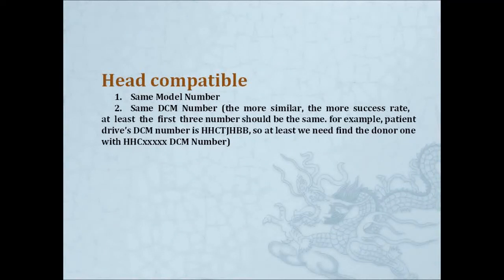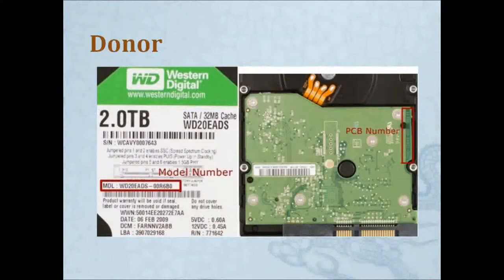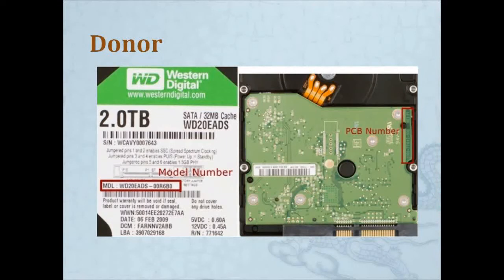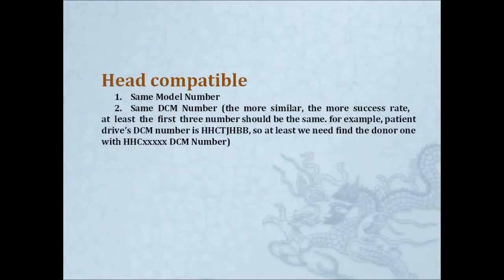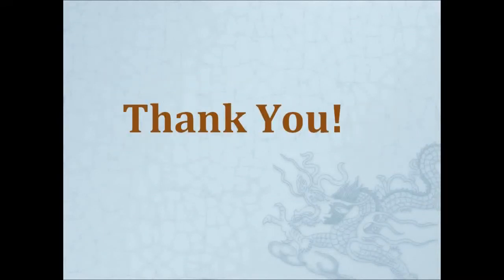If you're going to find a donor head, you need to find the same model and a drive with the same DCM number. The DCM number can be found on the sticker on the drive. So for a donor head: same model and same DCM. That's it for the introduction to WD drives. Thank you.